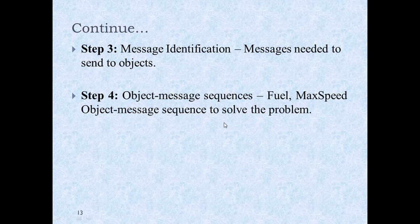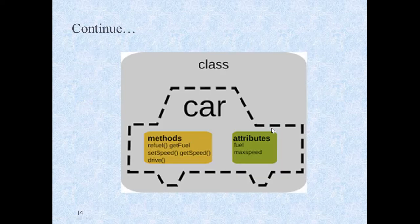Looking at the class diagram: one class will be created called Car. How many objects? Two objects — one is fuel and one is max speed. How many member functions? Three: one is get fuel, one is set speed, and one is drive. So you have getter, setter, and a drive function as the three major member functions.